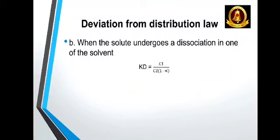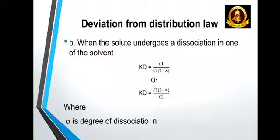That means per one unit, how much molecules were dissociated in organic solvents, where alpha is degree of dissociation.